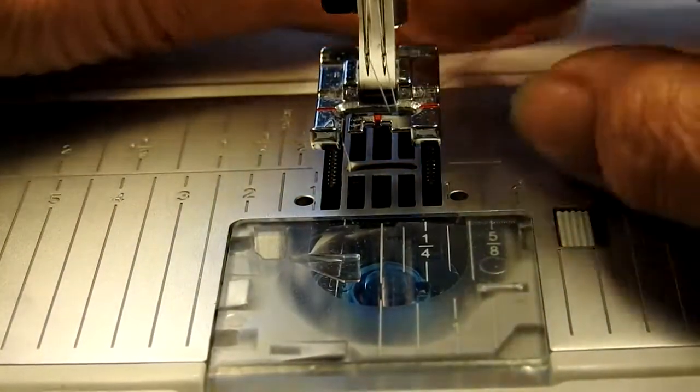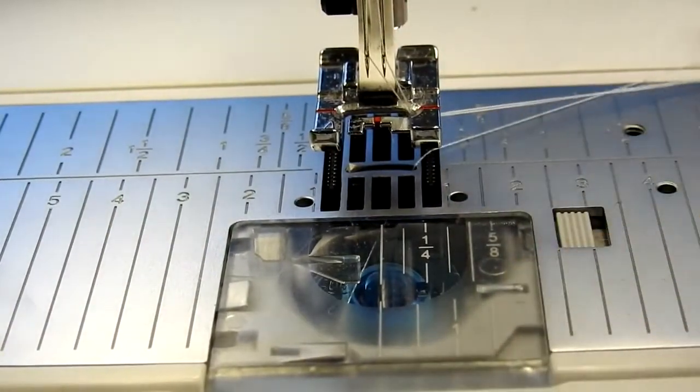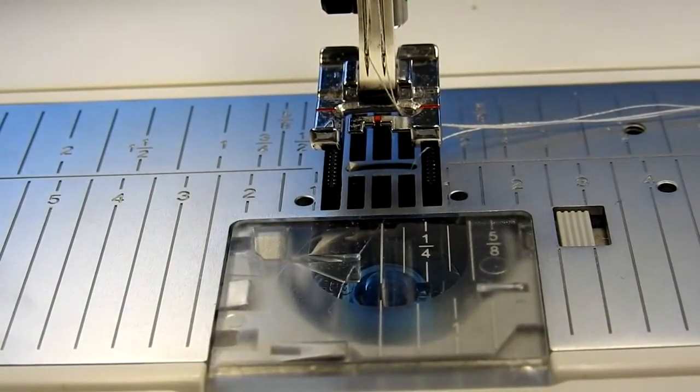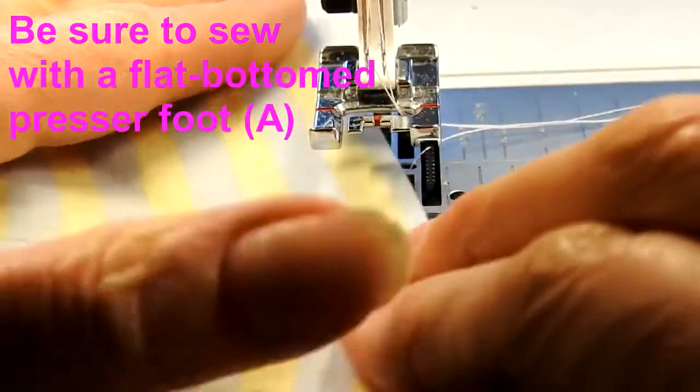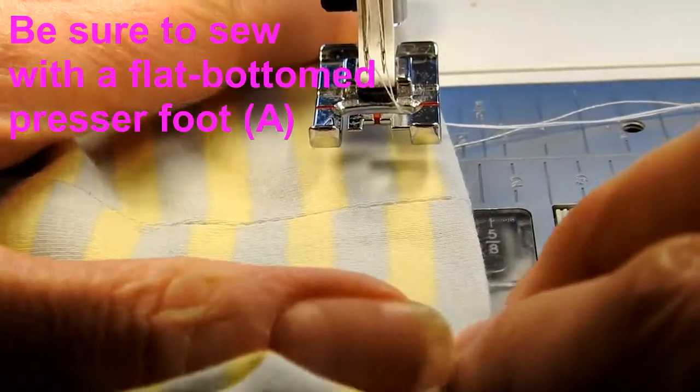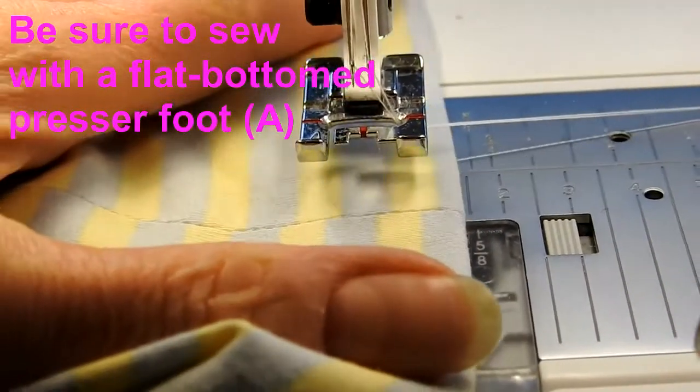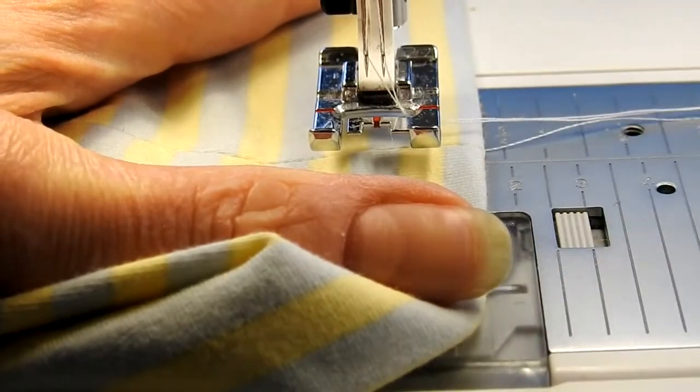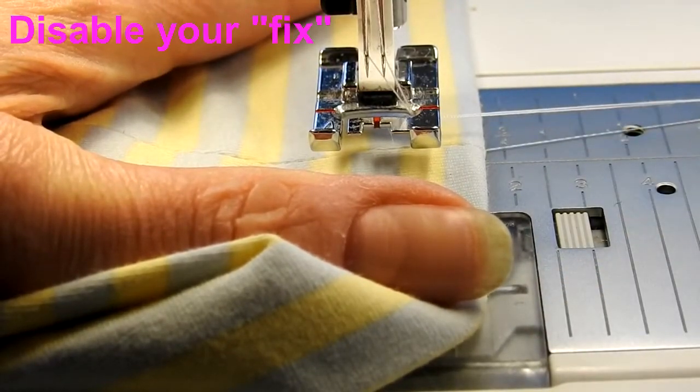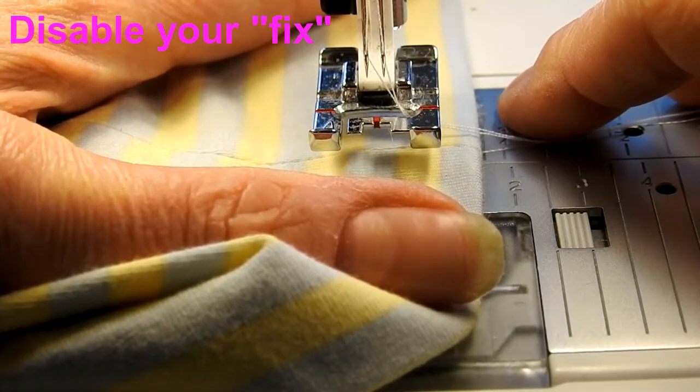So I'm going to turn my fabric over, making sure that I've got good track of all three of my threads, and I'm going to start near a seam. I've got my fold of my fabric along the 5/8 seam line.